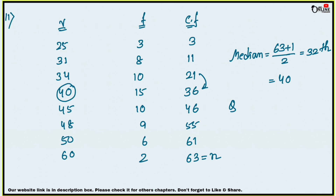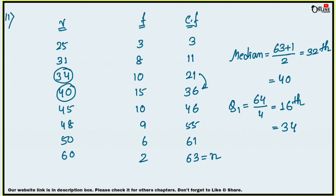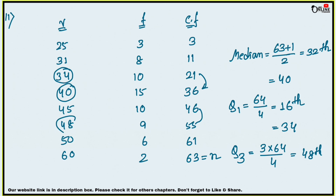For lower quartile Q1, since n is odd, formula is (n+1)/4 = 64/4 = 16th term. From 11 to 21 the value is 34, so Q1 = 34. For upper quartile Q3, formula is 3(n+1)/4 = 3×64/4 = 48th term. From 46 to 55 the value is 48, so Q3 = 48.